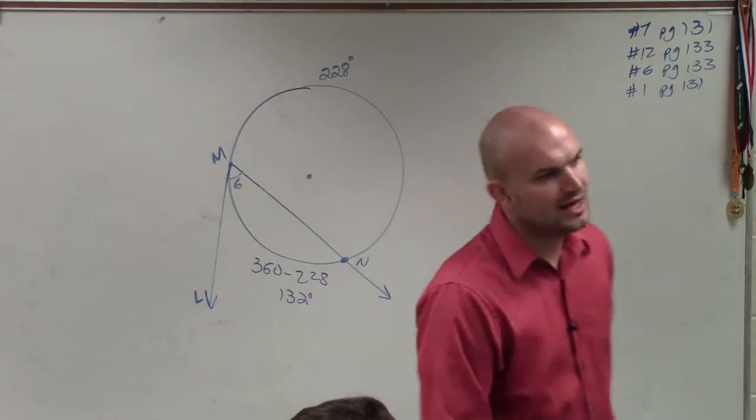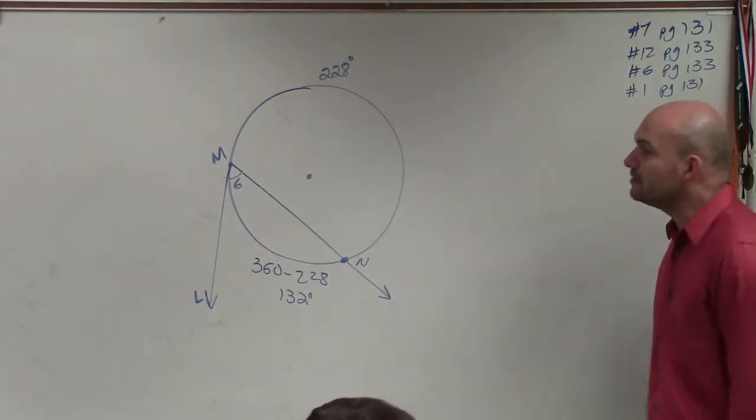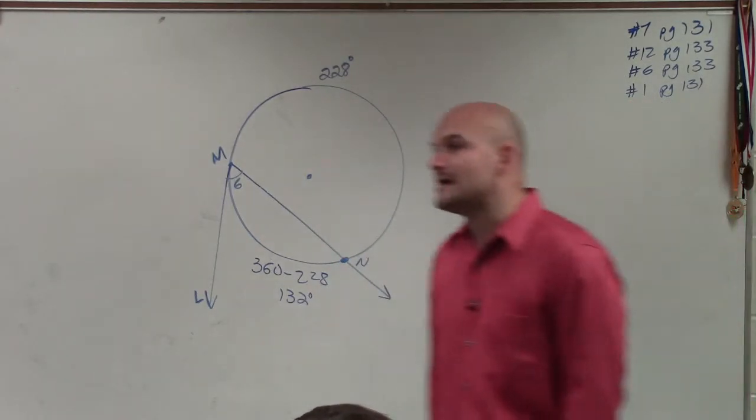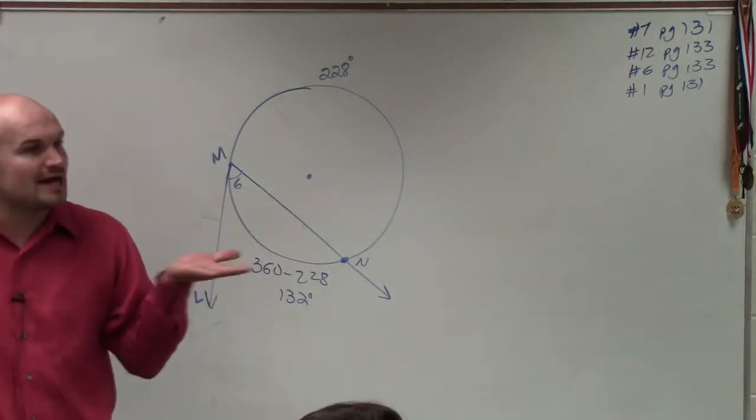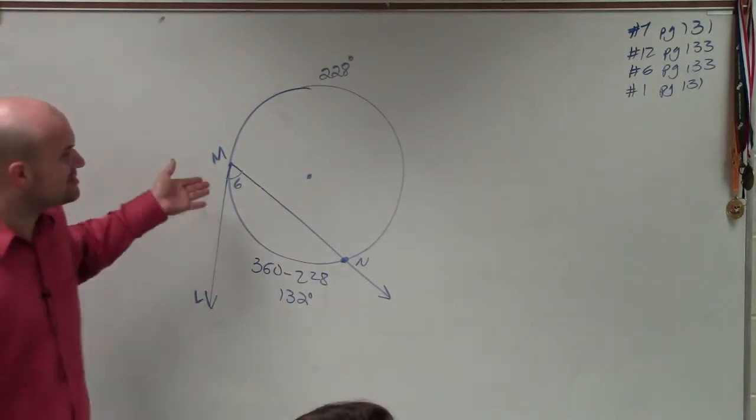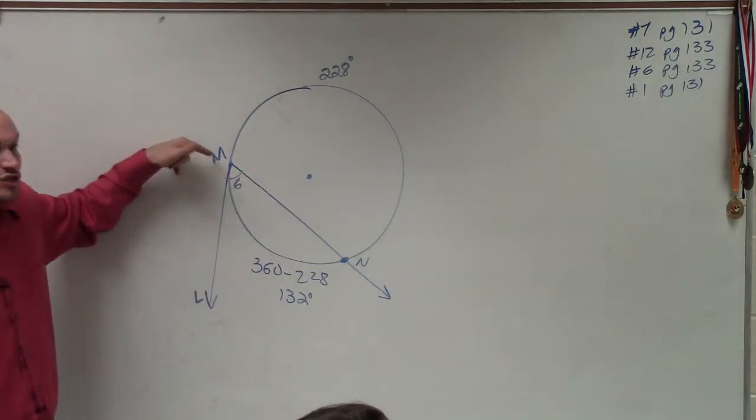Now the next thing that I look at, Alexandra, is what type of angle is this. This is an inscribed angle that has a secant and a tangent line. So since we're now including a secant and tangent line, this is still an inscribed angle.